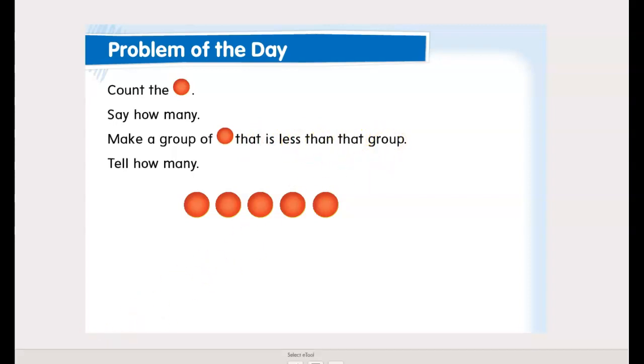Okay, so I'm going to just draw my circles the best I can. And I know that this group has to be smaller. Okay, so my group is smaller than that one. So that means that I have 4. Because 4 is smaller than 5. So 4 is less than 5.